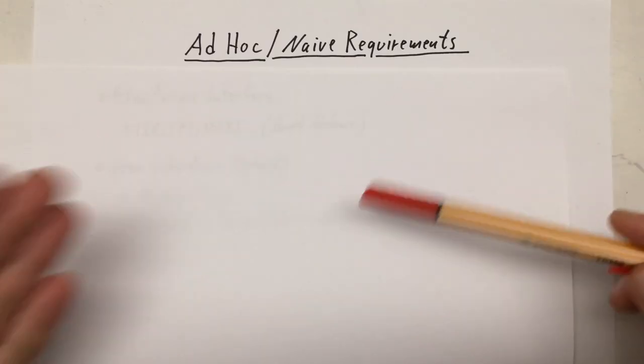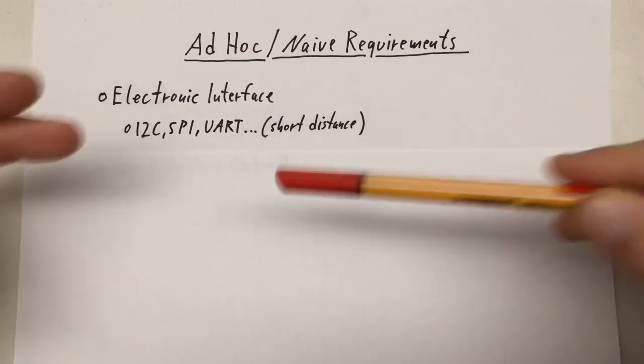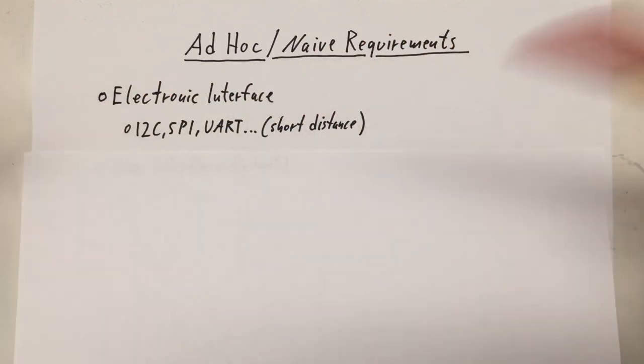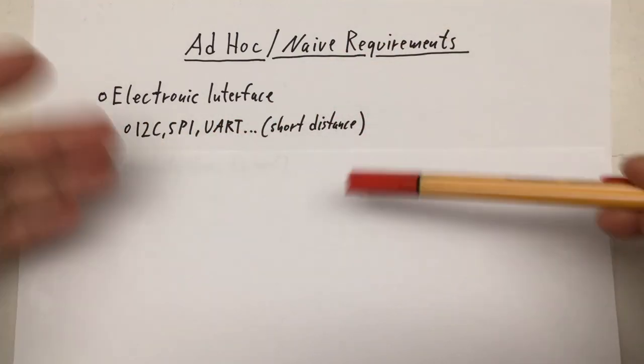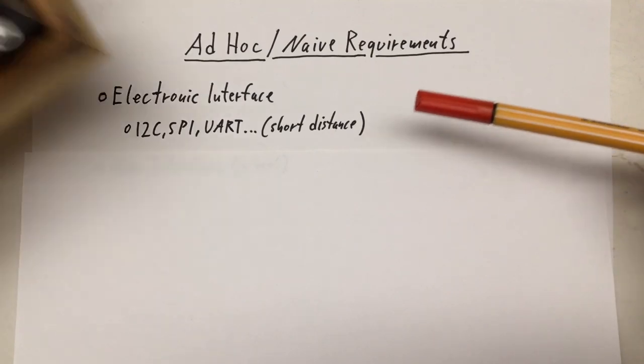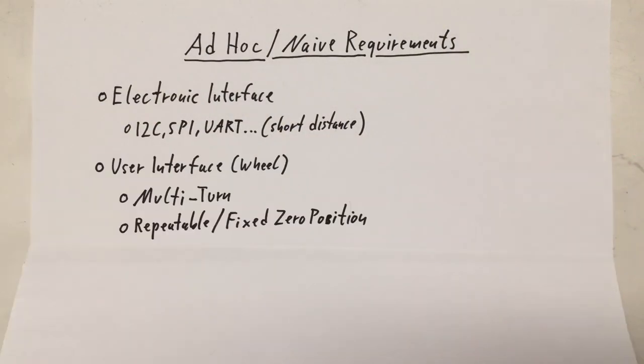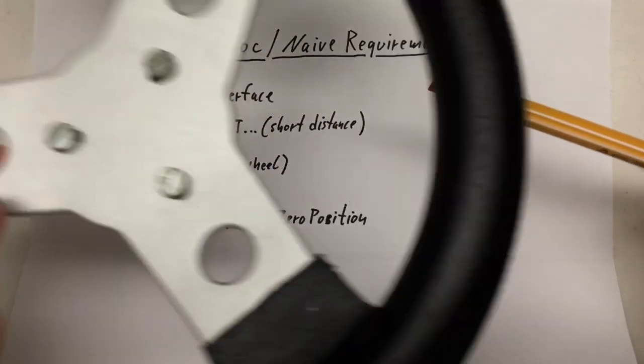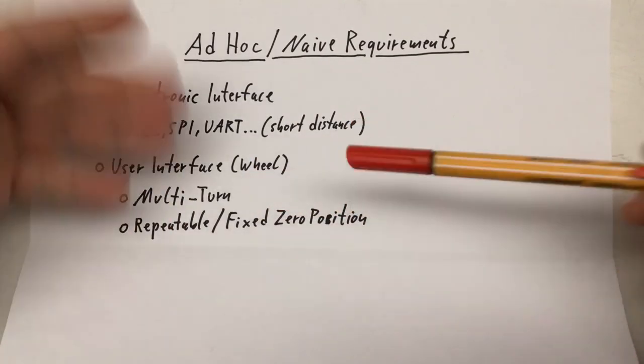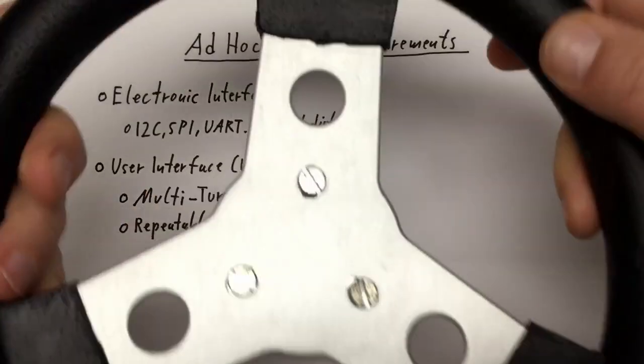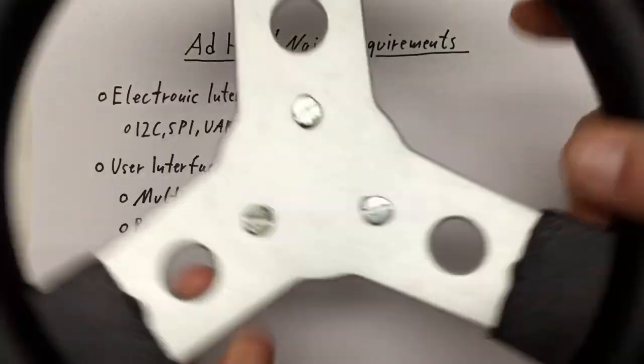So what are our ad hoc or naive requirements if we would just brainstorm? Of course, we need an electronic interface. It's in the name, and it will be I2C, SPI, or UART or some other short distance electronic interface. Here in that contraption, we have an I2C interface. The user interface, that is the wheel itself, should be of course multi-turn. I mean if you've ever driven a car, you have several turns to go from extreme left to extreme right.